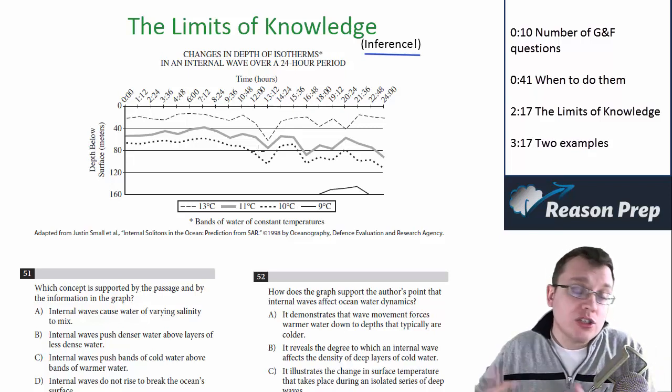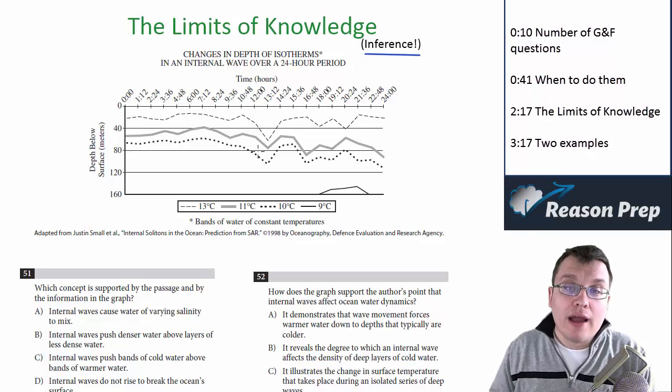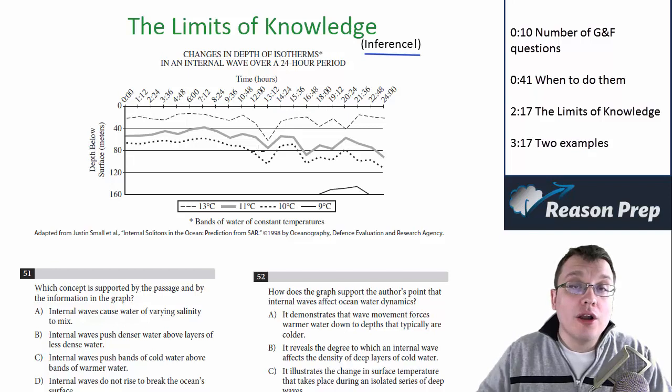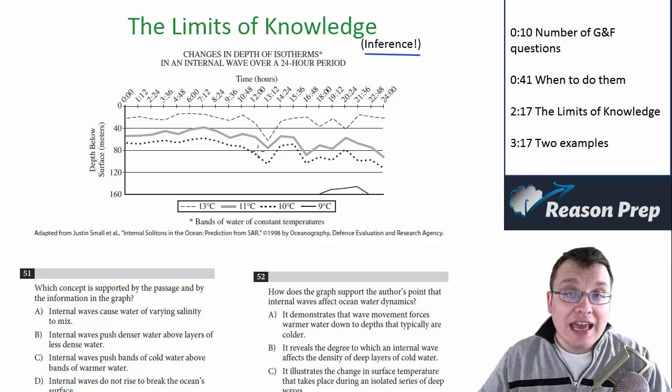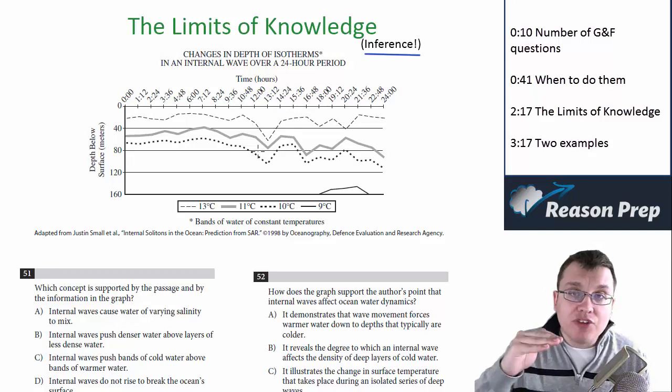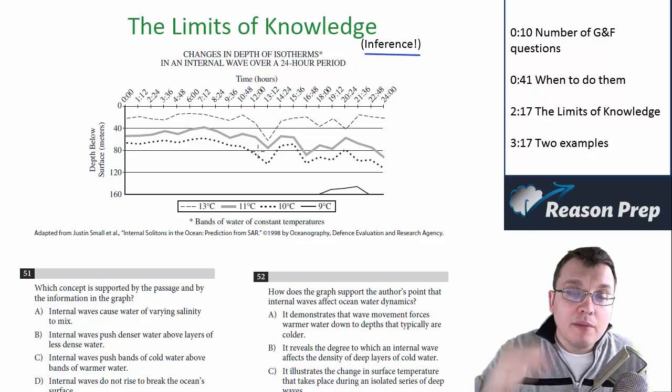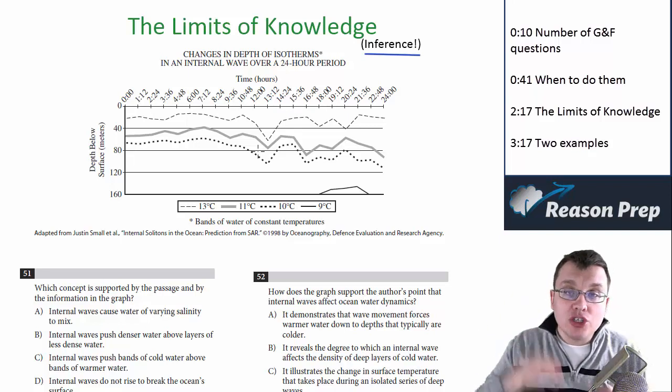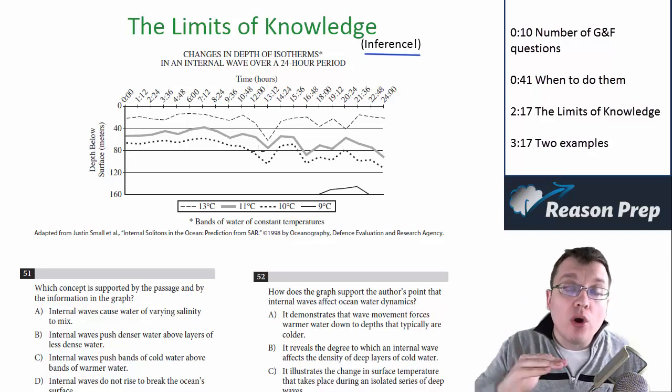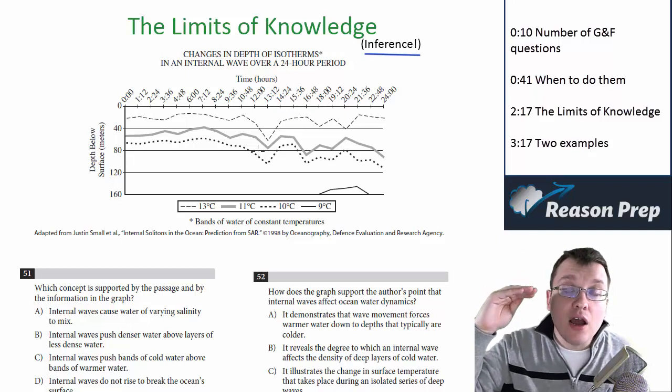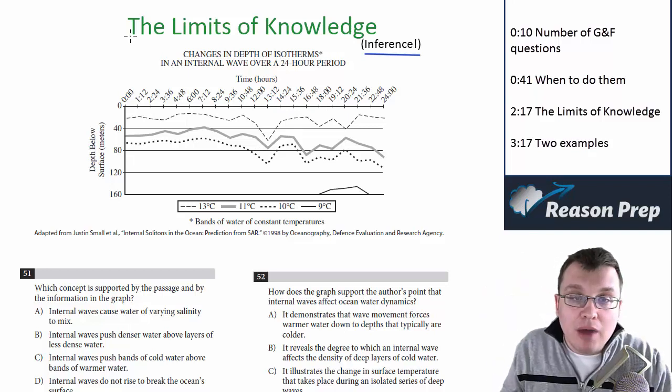But this is the key balance. When they ask you certain questions, harder questions about the graph, you're going to sometimes have to make an inference based on what information is contained in the graph. And as we've discussed with inferences, it's going to be one logical step beyond what's in the passage, what's in the graph. You don't want to go really far outside of what the graph can tell you.